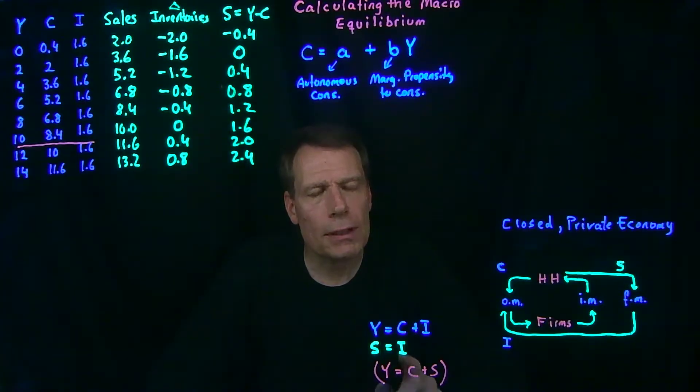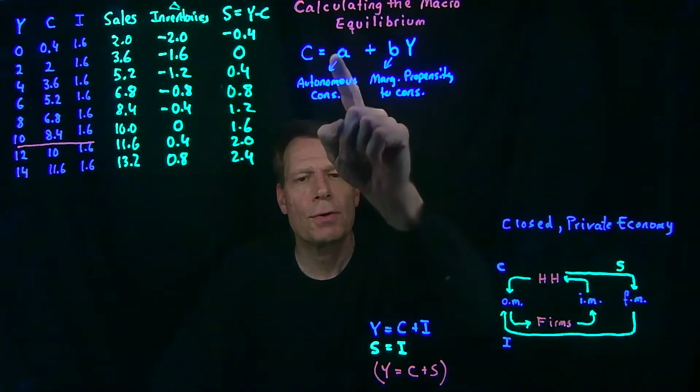Now we know that in equilibrium, this equation has to hold. Equilibrium GDP has to be equal to consumption plus investment. And now we have an equation for consumption.